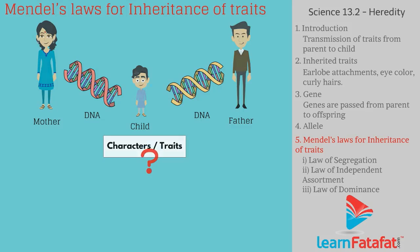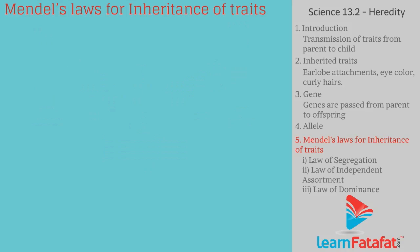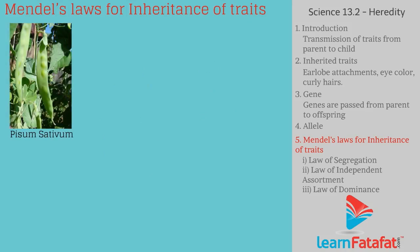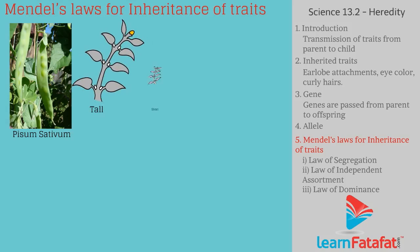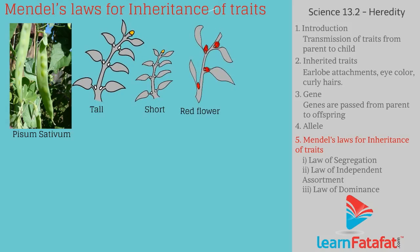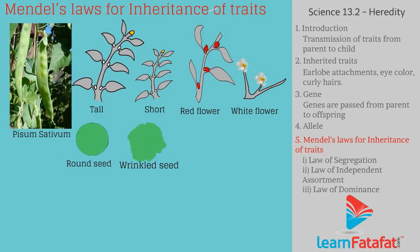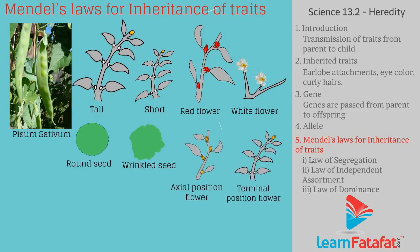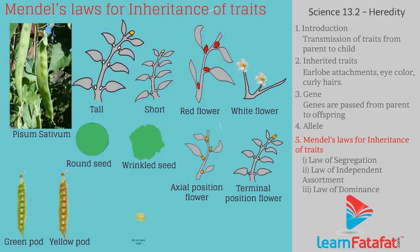Mendel conducted various experiments on the garden pea plant, Pisum sativum. During his experiments, he examined visible characters such as tallness or shortness, red or white color of flower, round or wrinkled seed, axial or terminal position of flower, green or yellow colored pod, and gray or white color of seed.